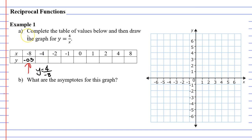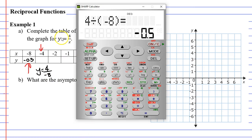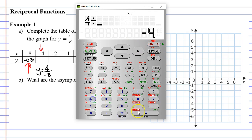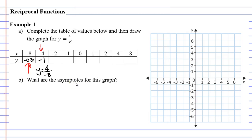Let's move on to the next column where x is negative 4. Again, y equals 4 over x, or in this case 4 divide negative 4. This time we get y equaling negative 1. I'm going to pause and finish off my table of values — I'd like you to do the same, pause and finish this off and see if you get the same as me.